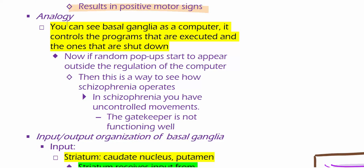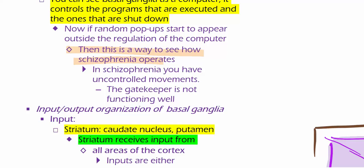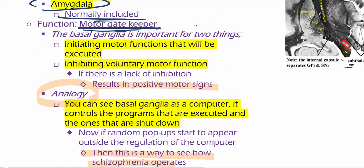If the computer is on, the basal ganglia is supposed to be turning on the applications and turning it off. Now, if you have a whole bunch of pop-ups coming out of nowhere, this is kind of like a way to visualize schizophrenia. In schizophrenia, you have uncontrolled movements. The gatekeeper or the basal ganglia is not functioning properly. It's supposed to be turning things on and turning things off, and because it's not doing that, we're getting all this crazy stuff occurring and all these pop-ups. Just an analogy to further the point of the function of the basal ganglia.